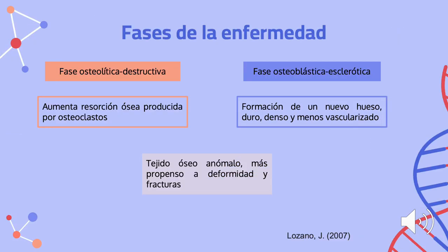Hay dos fases en la enfermedad. En la primera fase, llamada fase osteolítica destructiva, aumenta la resorción ósea producida por los osteoclastos. Y en la segunda fase, llamada la fase osteoblástica esclerótica, se da la formación de un nuevo hueso, duro, denso y menos vascularizado que el anterior. Esto provoca un tejido óseo anómalo más propenso a la deformidad y a las fracturas.